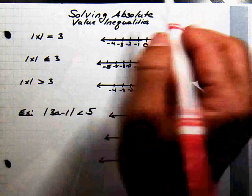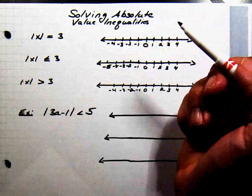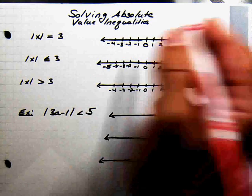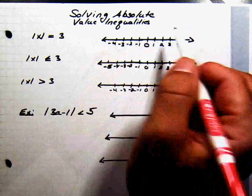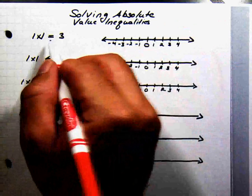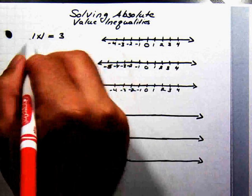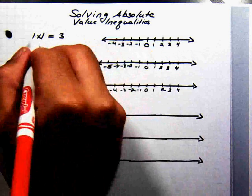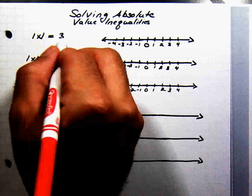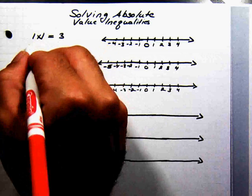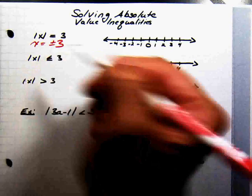In this video we're going to talk about solving absolute value inequalities. Before we move to absolute value inequalities, let's go ahead and refresh ourselves with absolute value equations. This equation says that a number's distance from 0 is 3, and two numbers fit that bill: positive and negative 3.